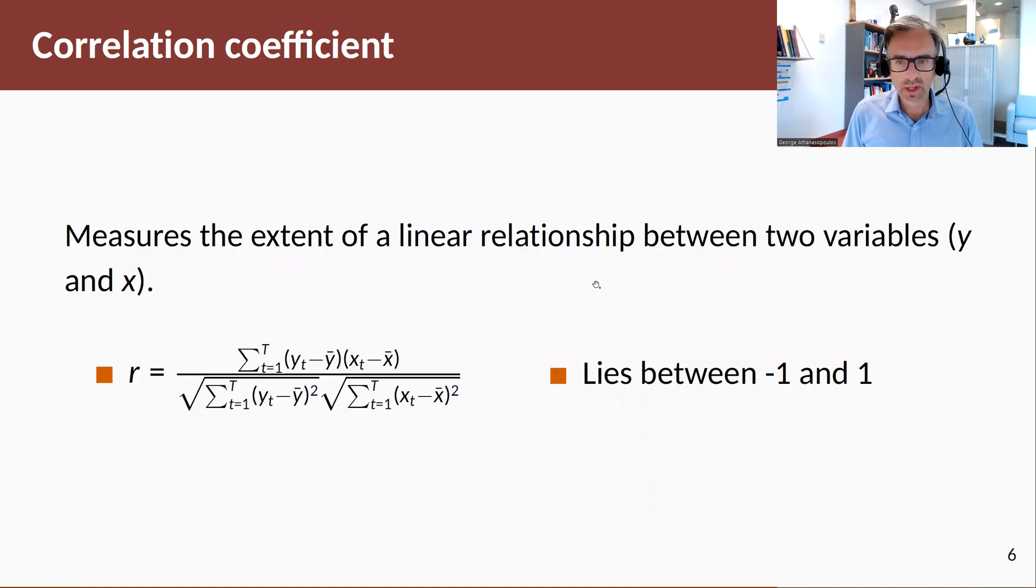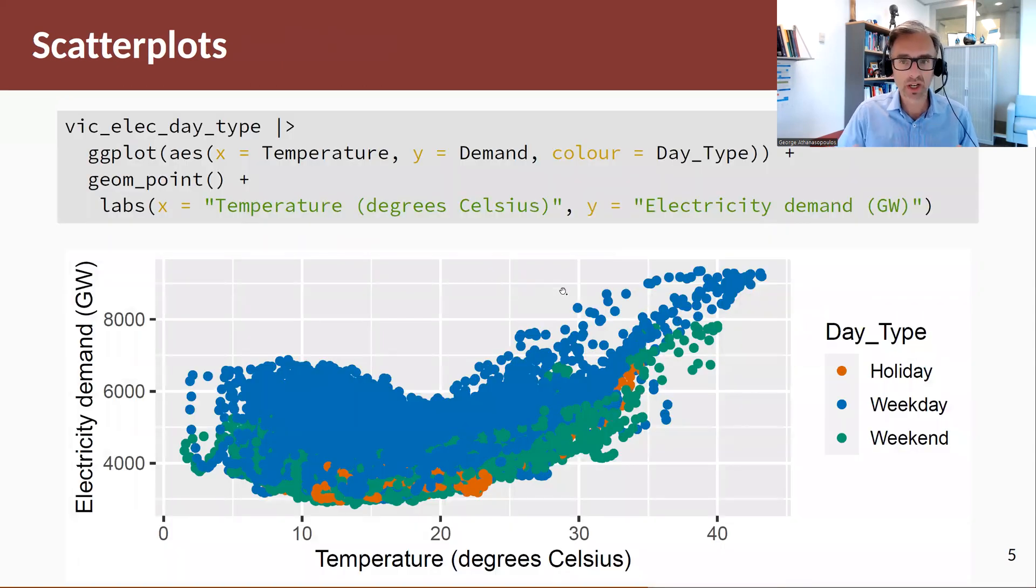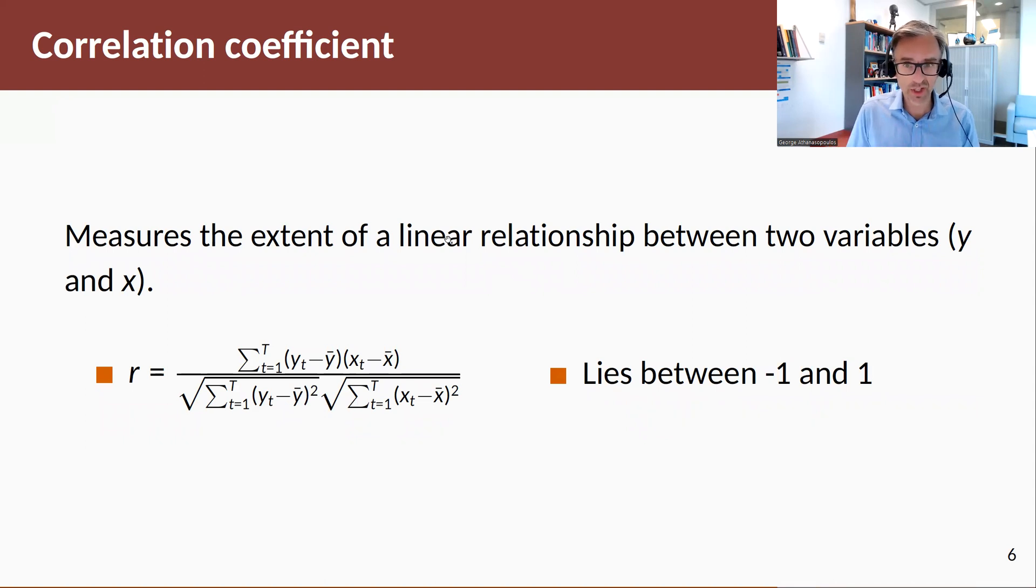One useful measure that we very often look at is the correlation coefficient, which is calculated using this formula and it shows the linear relationship between two variables y and x. In our case for the example that we looked before, we can calculate the correlation coefficient between electricity demand and temperatures. Notice though that we point out here it's the linear relationship and it doesn't capture the non-linear areas that we see in the previous slide.